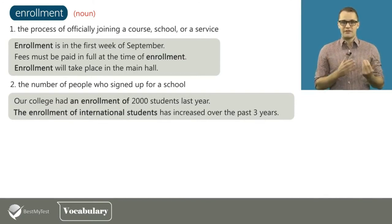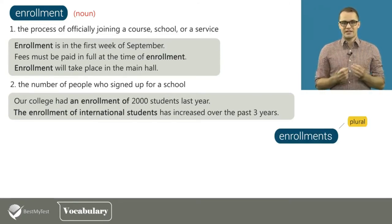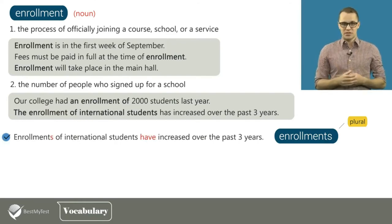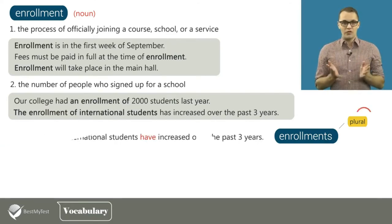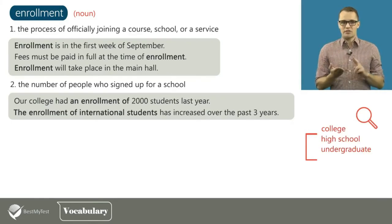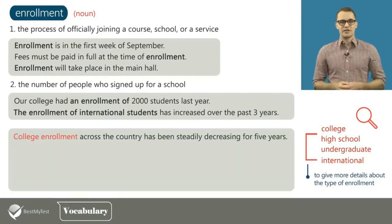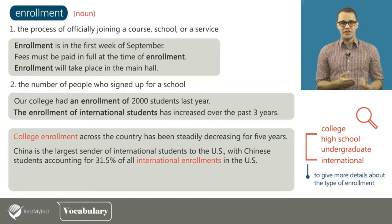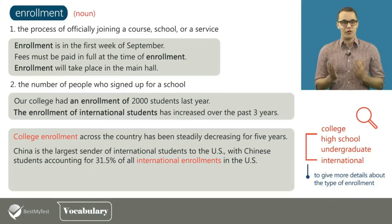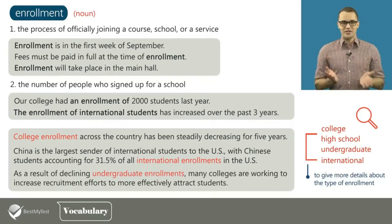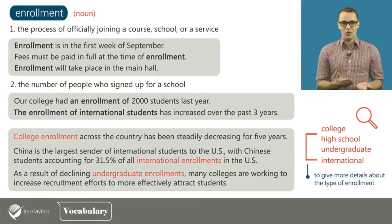Similar to admissions, you may find the plural enrollments as well. For example: enrollments of international students have increased over the past three years. We often add words like college, high school, undergraduate, international, and others before enrollment to give more details about the type. For example: college enrollment across the country has been steadily decreasing for five years. China is the largest sender of international students to the US, with Chinese students accounting for 31.5% of all international enrollments in the US. As a result of declining undergraduate enrollments, many colleges are working to increase recruitment efforts to more effectively attract students.